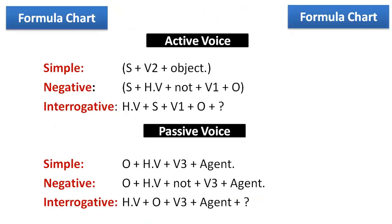Look at these sentences carefully. We have a formula chart for past simple tense. When making a simple active sentence, use the second form of the verb. For negative, use 'did' with the first form of the verb. For interrogative, also use 'did' with the first form. For passive: simple — Object + helping verb (was/were) + third form + agent. Negative — Object + helping verb + not + third form + agent. Interrogative — helping verb + object + third form + agent + question mark.